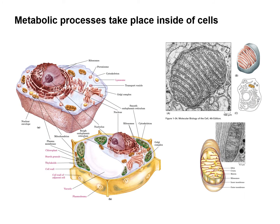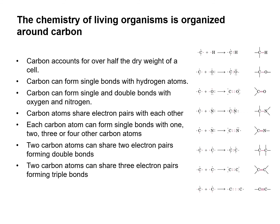Metabolic processes take place inside cells, both animal and plant cells. Mitochondria and chloroplasts play a critical role in metabolic processes where they generate energy or ATP. We will discuss metabolic processes in the cell in more depth later in this section. Now let's shift focus to the chemistry important for metabolism and understanding its mechanisms.